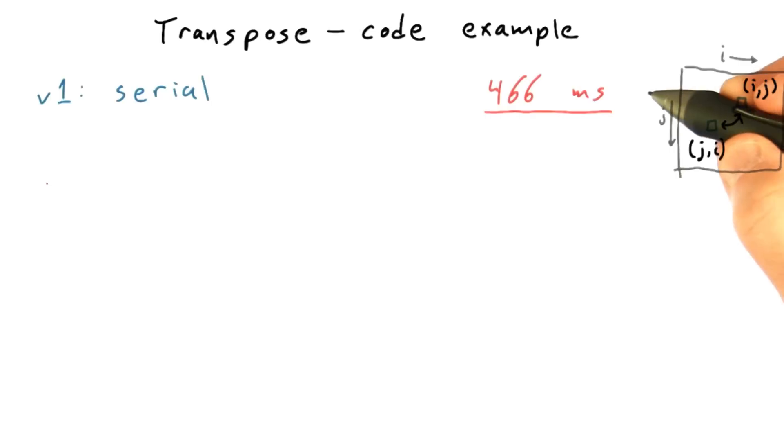So even though this simple serial kernel may seem very naive, that's really sometimes the right thing to do. So keep this in mind when you're optimizing. Think about what you need to optimize, whether it's important.